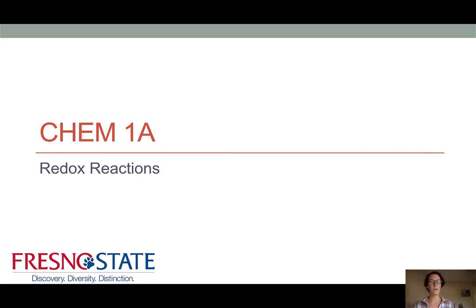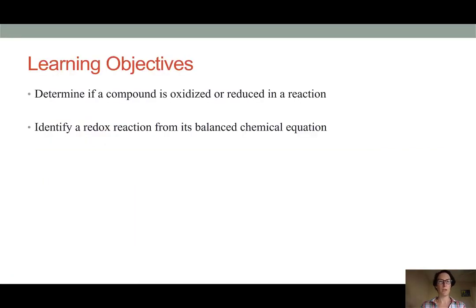Hello. This Chem 1A lesson deals specifically with chemical reactions involving redox chemistry. Our learning objectives are to determine whether a compound is oxidized or reduced in the process of a reaction and to recognize a redox reaction from a balanced chemical equation.